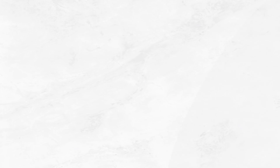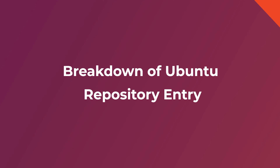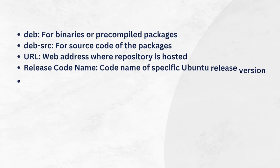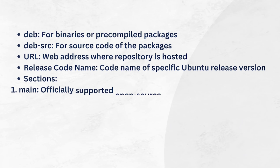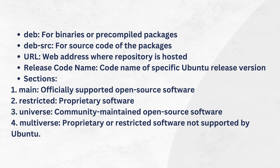Inside the sources.list file you will find the web addresses of these bookshelves, telling APT where to go to download and install the programs you want. Each repository entry in the list specifies the location of the repository, the release code name, and the sections of packages available. Debian repositories contain binaries and pre-compiled packages, which are required for most users.